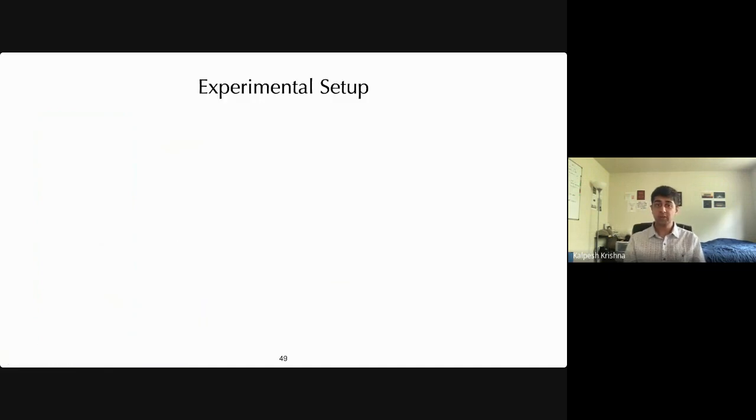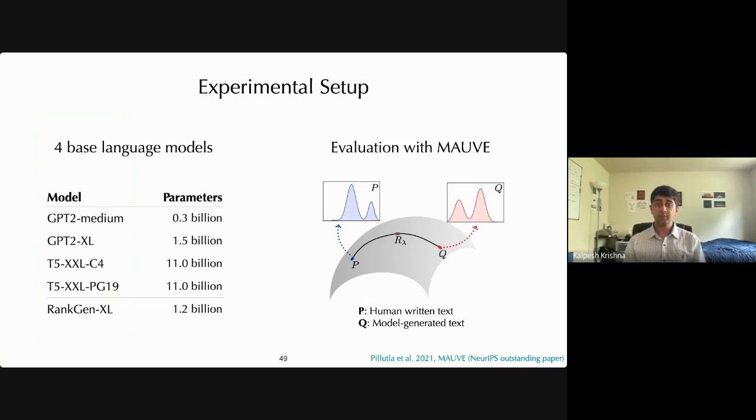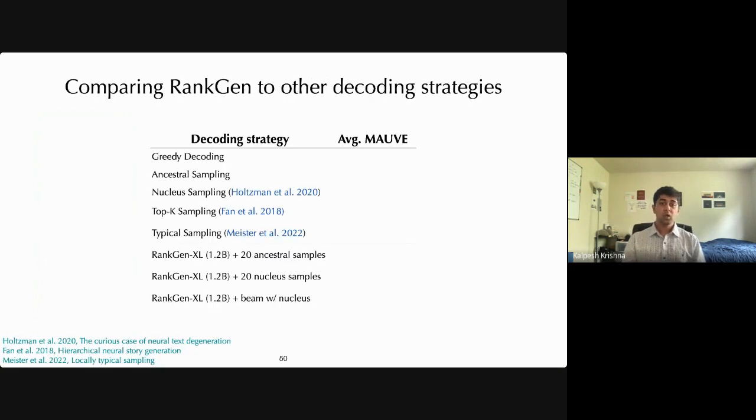So I'll now move on to our experimental setup. In our experiments, we decoded text from four causal language models and considered language models having sized 300 million parameters to 11 billion parameters, including fine-tuned T5-XXL models. Our largest RankGen had 1.2 billion parameters. So we are testing models both bigger as well as smaller than RankGen to see whether it generalizes across sizes. For automatic evaluation, we use a MAUVE metric, which measures the similarity of the distribution between machine-generated text and human-written text. In the paper that introduced MAUVE, they showed that MAUVE has high correlation with human judgments, and that's why we will use it for all of our automatic evaluation.